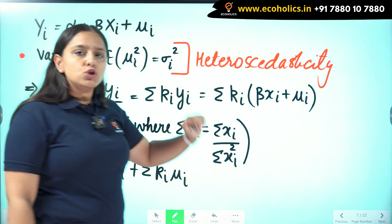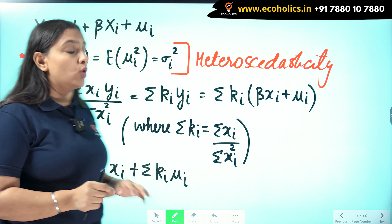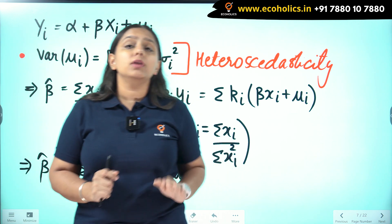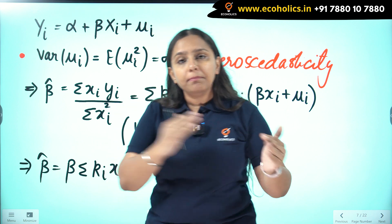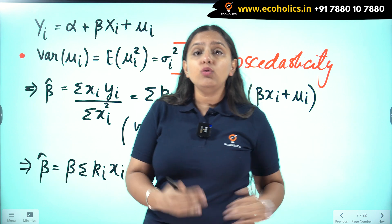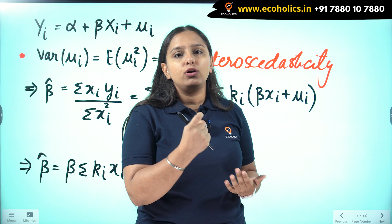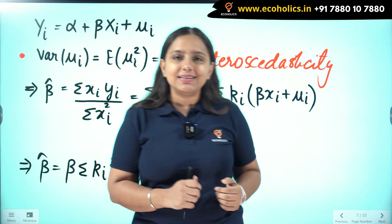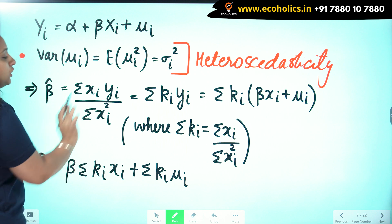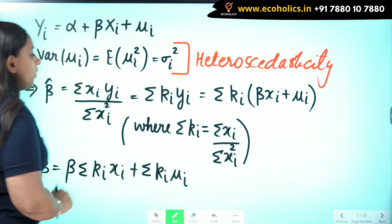With one explanatory variable, beta hat is given by a specific formula. Whenever such econometric questions come in your exam, there are a number of formulas for getting beta hat, and it depends on which one you pick to prove a particular thing. Here I have picked the formula in deviation form: summation xi yi upon summation xi squared.